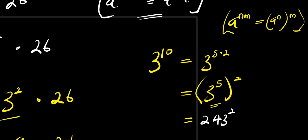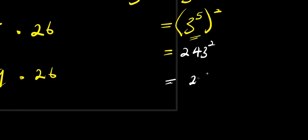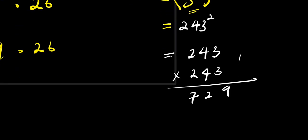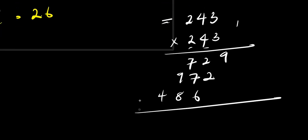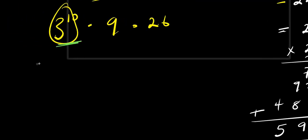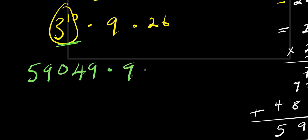So we have 243 raised to the power of 2, which will simply give us 243 times 243. Computing this multiplication: 3×3=9, 3×4=12 carry 1, 3×2=6 plus 1 is 7. Then 4×3=12, 4×4=16 plus 1 is 17 carry 1, 4×2=8 plus 1 is 9. Then 2×3=6, 2×4=8, 2×2=4. Adding up: the result is 59,049. So 3 power 10 is 59,049, times 9, times 26.